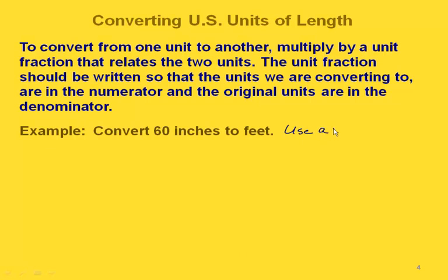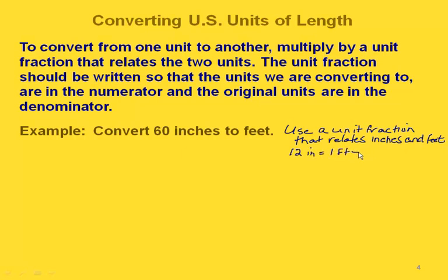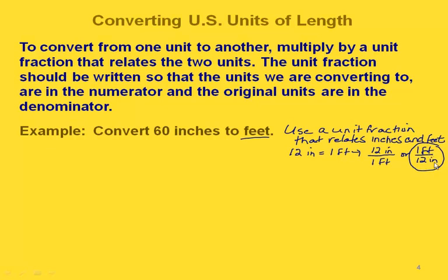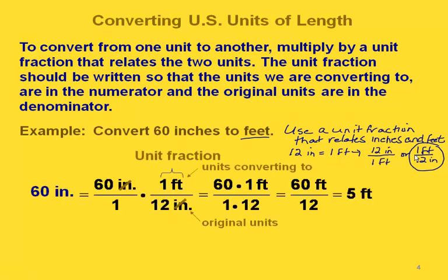To convert 60 inches to feet, we need a unit fraction that relates inches and feet. We know that 12 inches is the same as one foot, so we have two unit fractions we could use: 12 inches over 1 foot, or 1 foot over 12 inches. We have to pick the one that will work. Since we want to convert to feet, we want feet in the numerator — so we pick 1 foot over 12 inches, with the original units in the denominator.